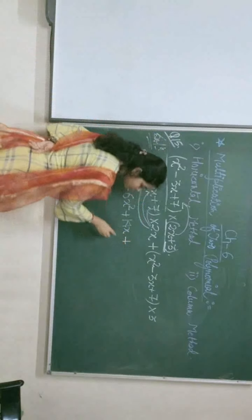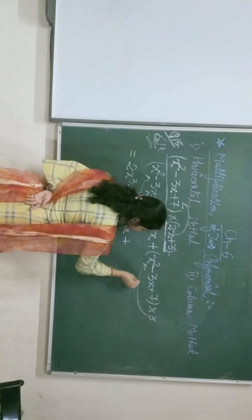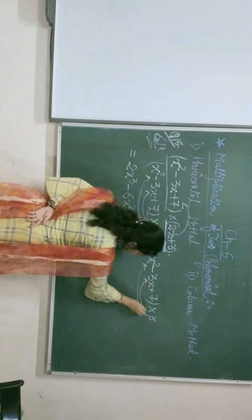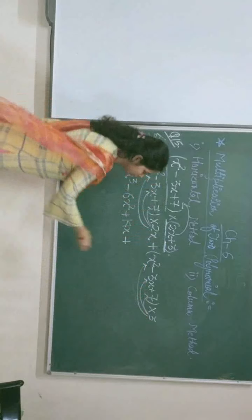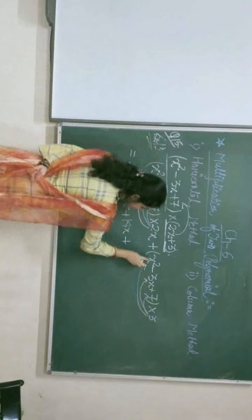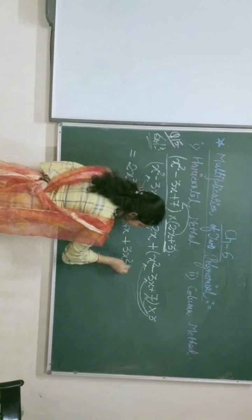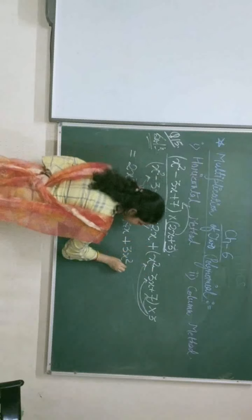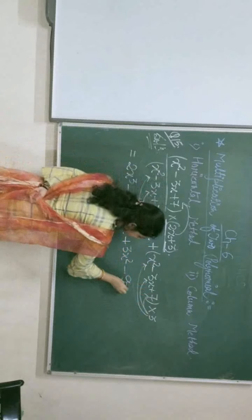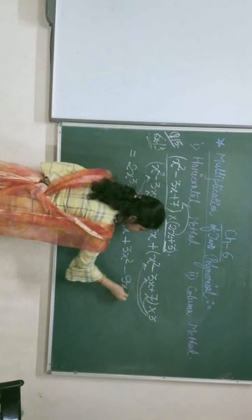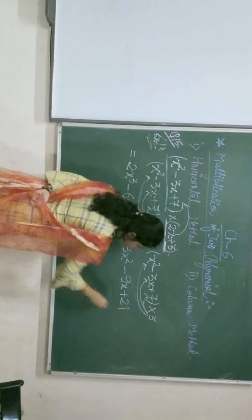Now next, addition sign is here. We do the same as earlier. We multiply this 3 with these 3 terms. What does it mean? 3 into x squared is 3x squared, minus. And 3 into 3 is 9x, plus. And 7 into 3 gives 21.